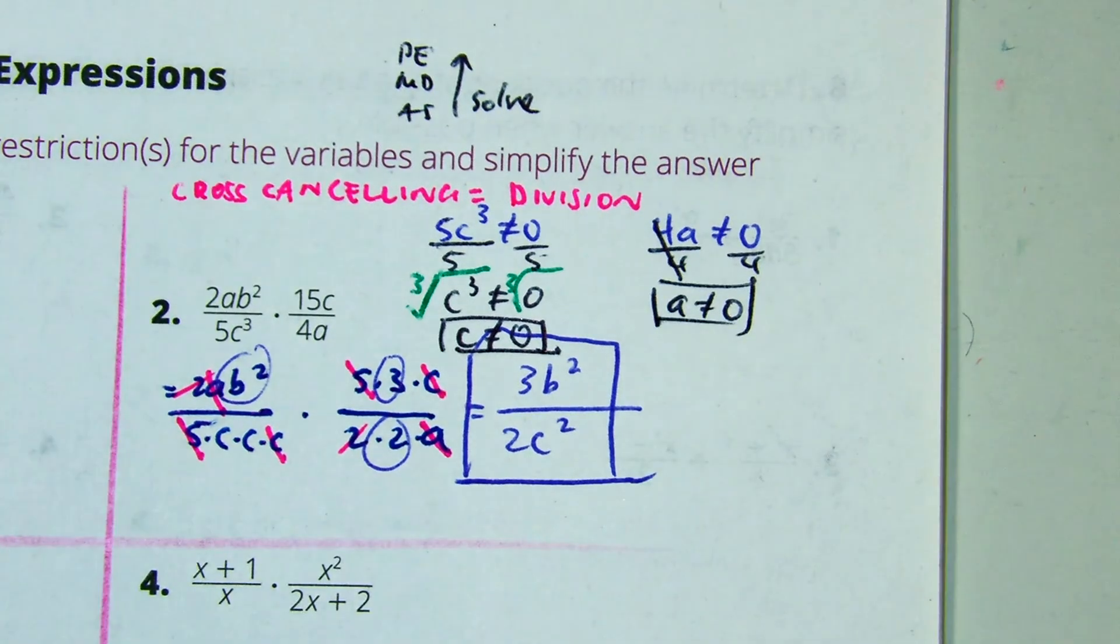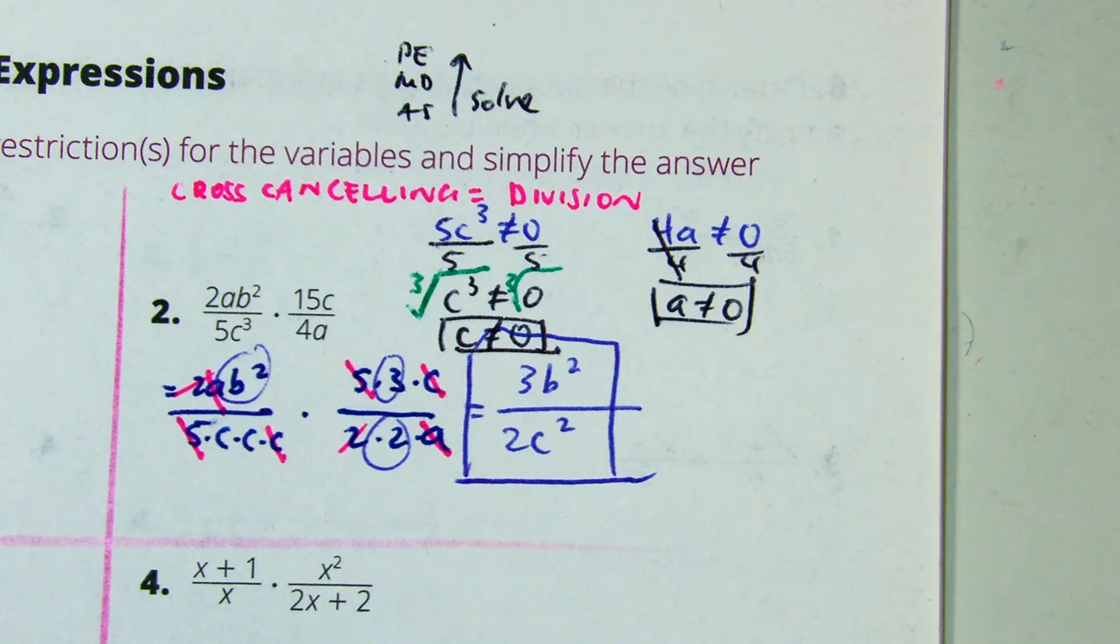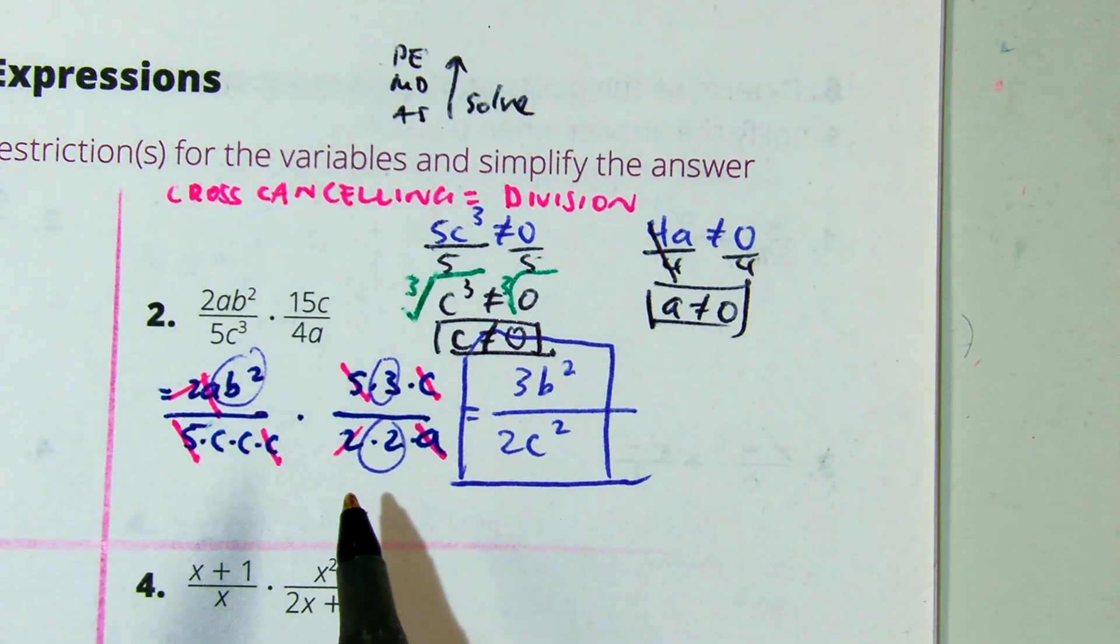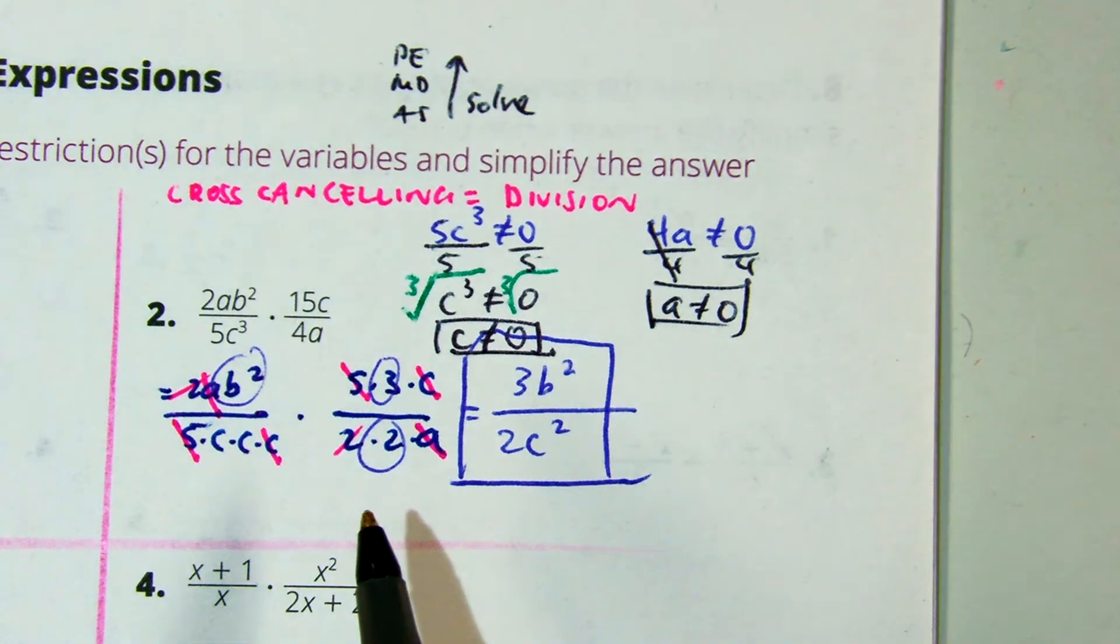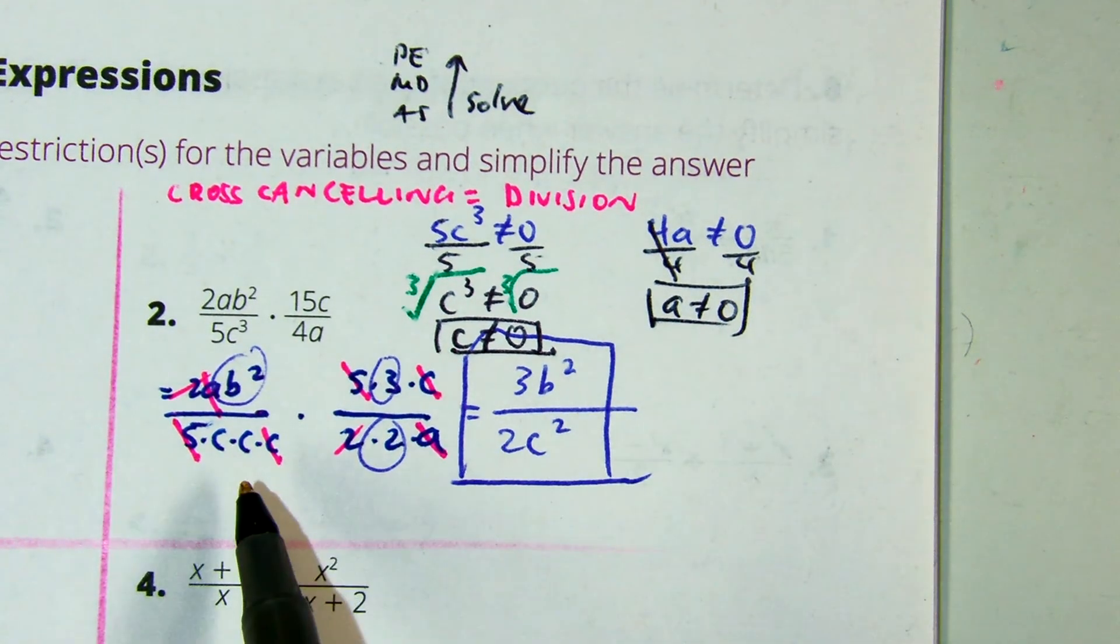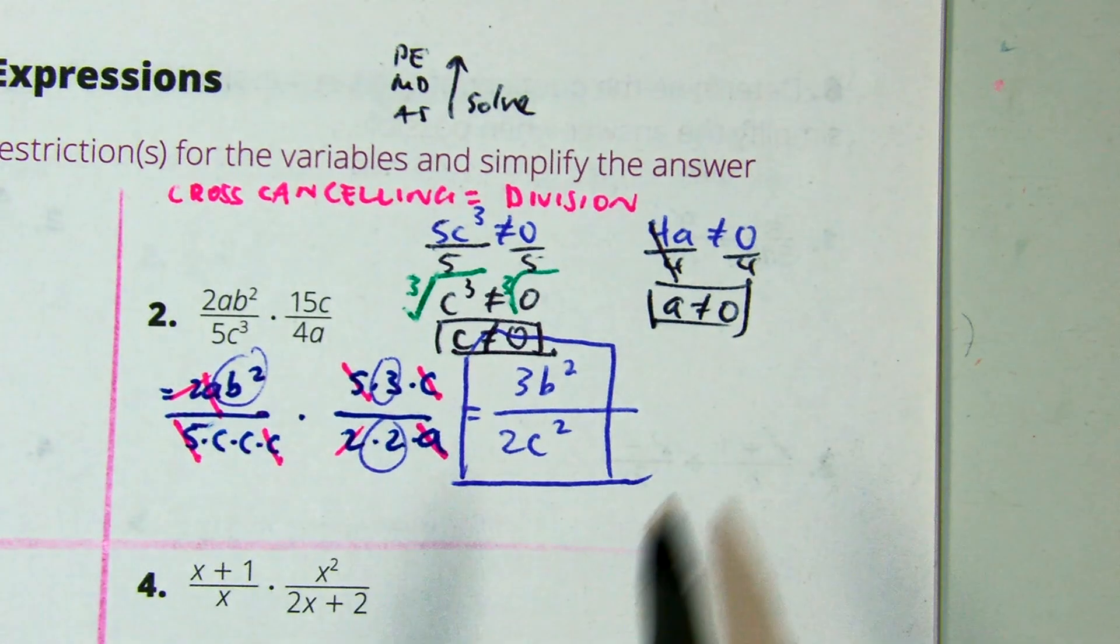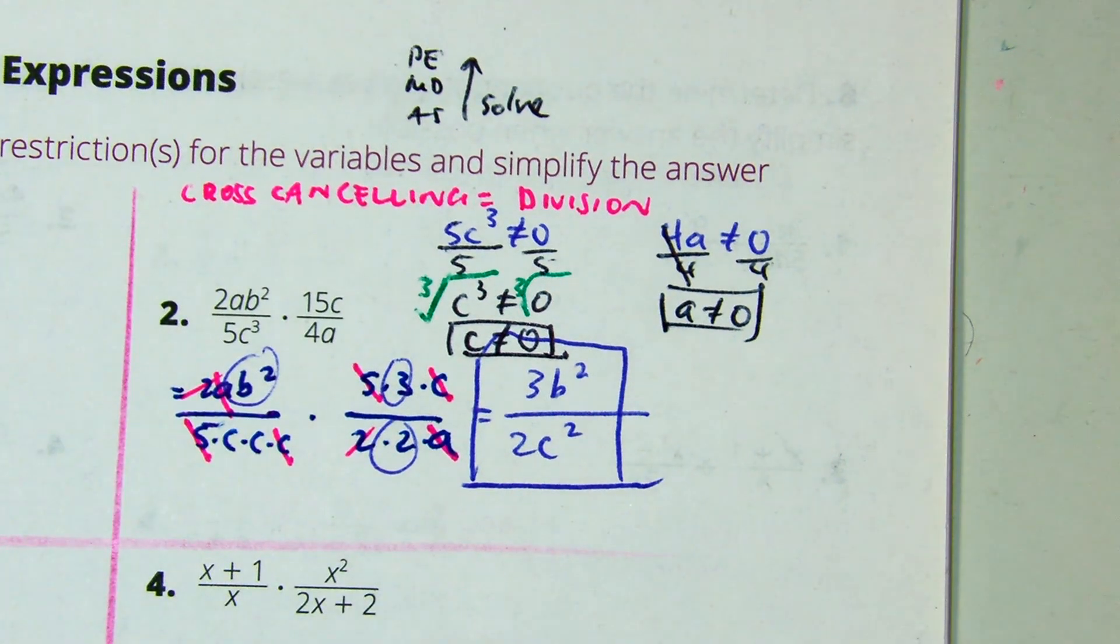So, it's the same thing as what we're doing with addition and subtraction. The only difference is you don't need an LCD. Factor first. See what they have in common. Cancel those by division. And then set your denominators not equal to 0 in the original problem to find your restrictions.